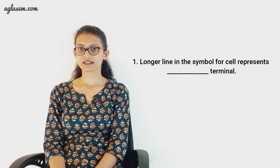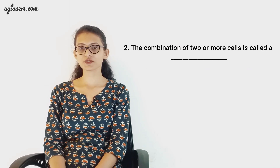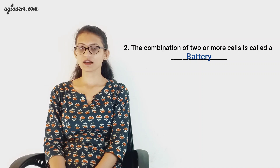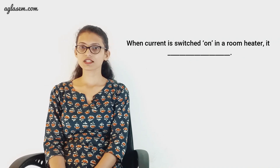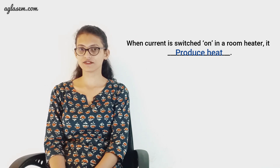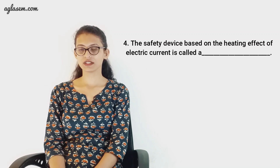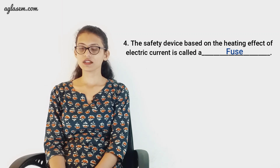Coming to question eight — fill in the blanks. First: the longer line in the symbol for a cell represents the positive terminal. Second: the combination of two or more cells is called a battery. Third: when current is switched on in a room heater, it produces heat because of the heating effect. Fourth: the safety device based on the heating effect of electric current is called a fuse.